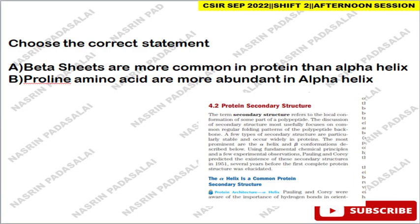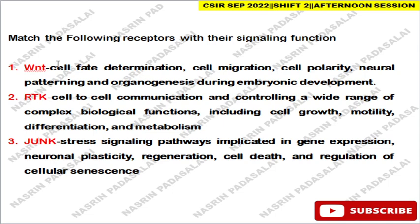The next question is regarding master signaling receptors with a signaling function. The WNT receptor is responsible for cell fate determination, cell migration, cell polarity, neural patterning, and organogenesis during embryonic development. The RTK receptor is involved in cell-to-cell communication and controlling a wide range of complex biological functions like cell growth, motility, differentiation, and metabolism. The JNK pathway is involved in stress signaling and is implicated in gene expression, neuronal plasticity, regeneration, cell death, and regulation of cellular senescence.